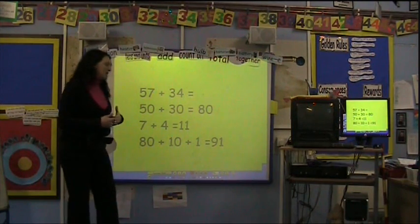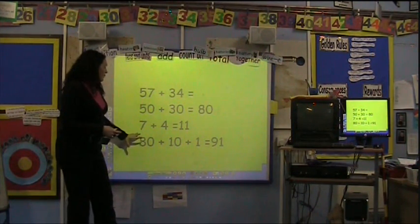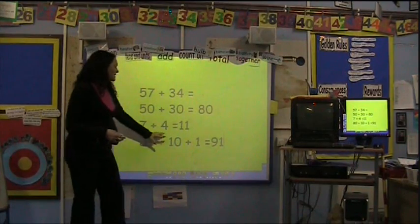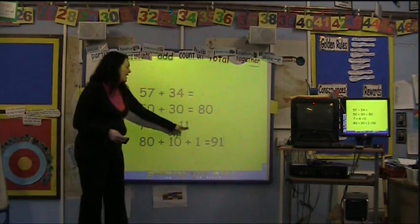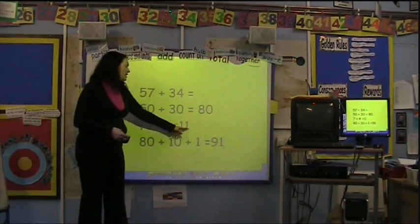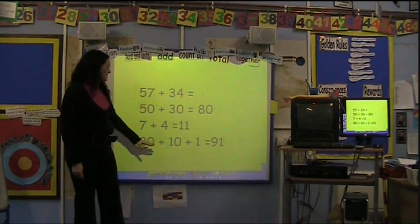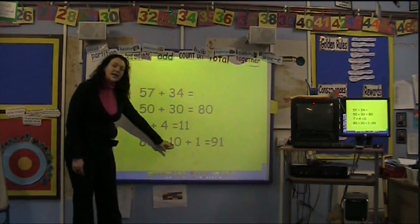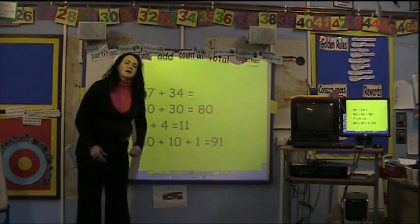But if they're still in the early stages of their understanding, we would ask them to do 80 add 10 add 1, which is the 11 broken up into 10 and 1. So then the children can simply add 80 and 10, which they know would be 90, then add the 1 is 91.